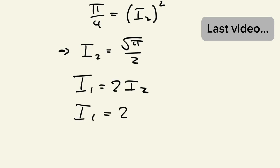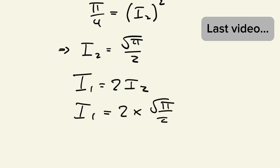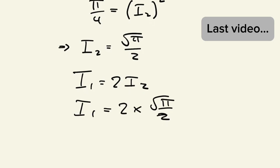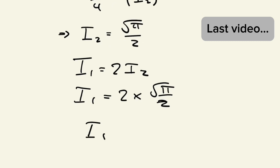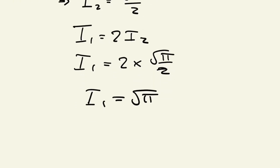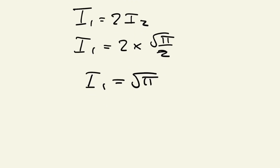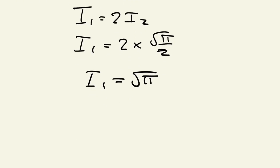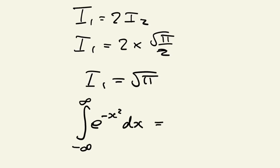I1 is equal to 2 times root pi over 2, which of course means that I1 is equal to root pi. Let's just recall what I1 was: I1 was the integral from negative infinity to infinity of e to the negative x squared dx, which is equal to root pi.